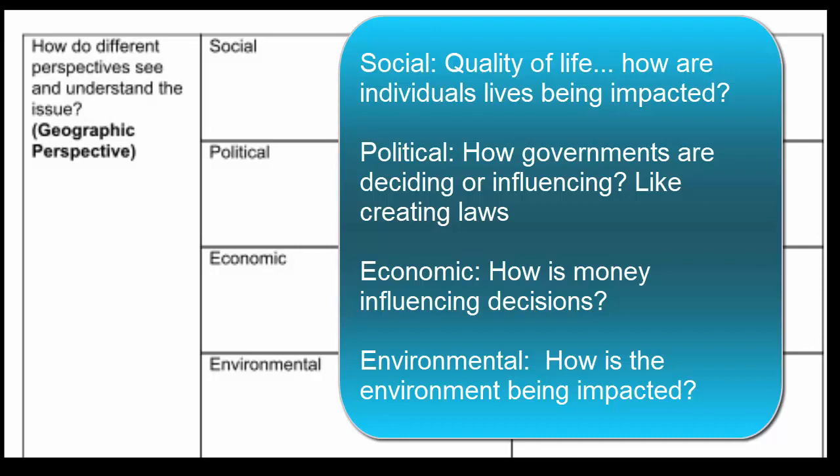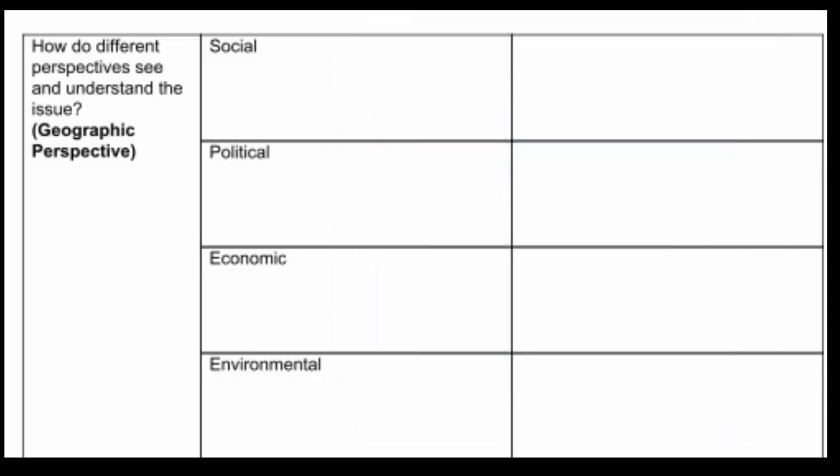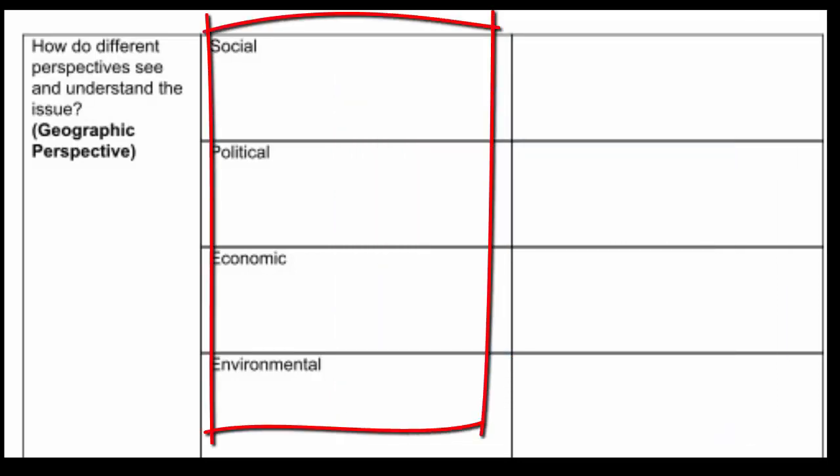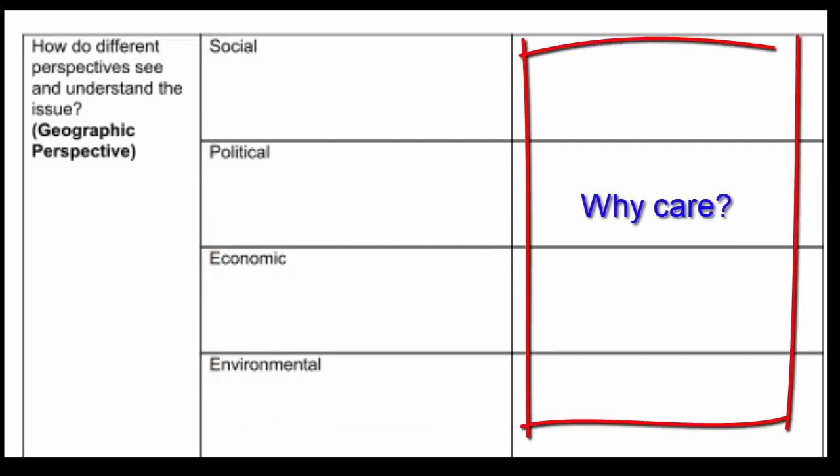Economic, how is money influencing the decisions being made? Environmental, is the environment going to be impacted? So in the one column, you are looking at identifying what are the different perspectives that are being represented. In the second column, you are trying to look at the significance, the why care part.